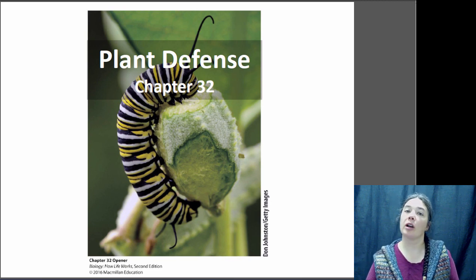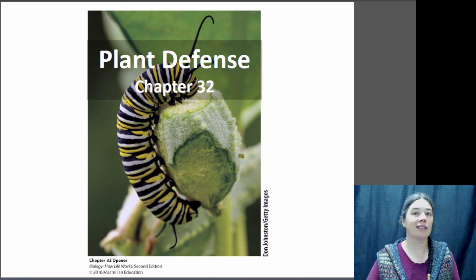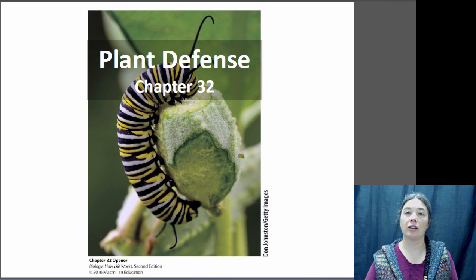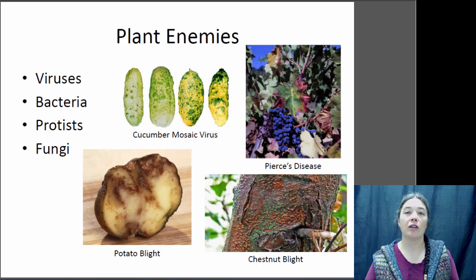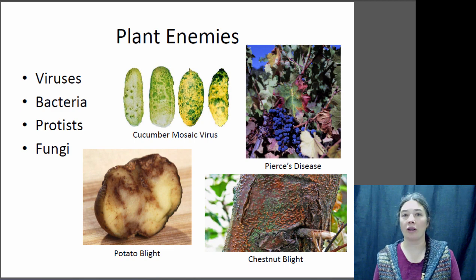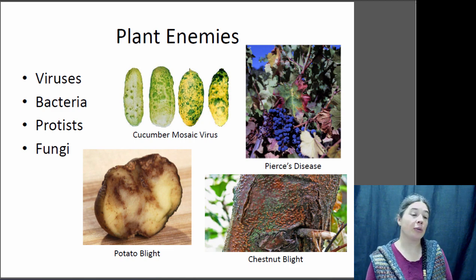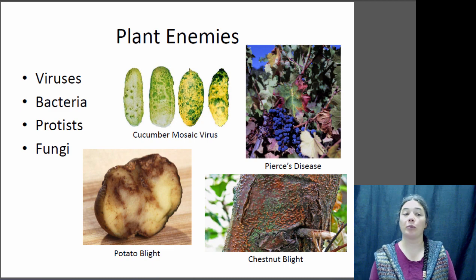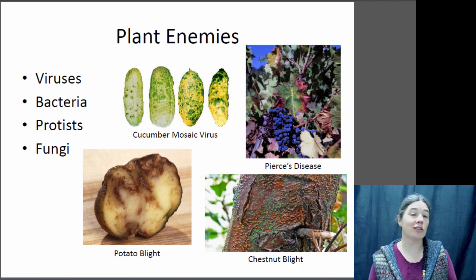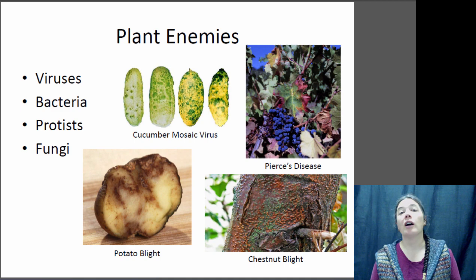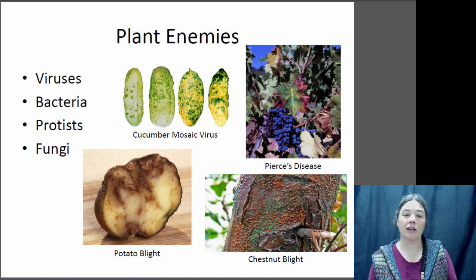Hi, this is Dr. Clare and today we're going to be talking about how plants defend themselves from their enemies. It turns out plants actually have a lot of enemies. There are a number of different organisms that can infect plants and cause disease, so plants are susceptible to viruses, bacteria, protists, and fungi, much as animals are. And some of these are pretty significant diseases.